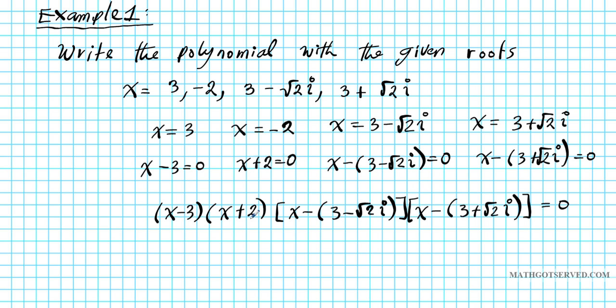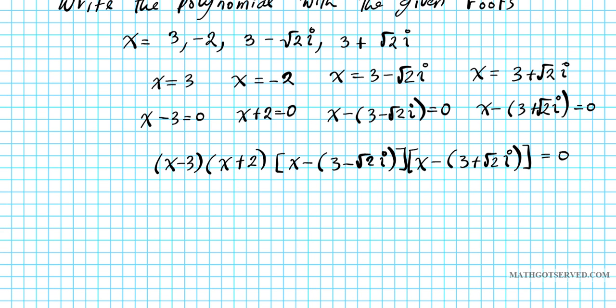Let's start with (X-3) times (X+2). That's easy to compute. So if we multiply it, X times X is X², X times 2 is +2X, -3 times X is -3X, and -3 times 2 is -6. So just by simply foiling first outer inner last, this would be the result we get. When we combine like terms, we're going to have the expanded form of the first two, which is X² - X - 6, times the story we have going on on the left side here. So we're going to have (X² - X - 6) times [X - (3-√2i)][X - (3+√2i)] = 0.